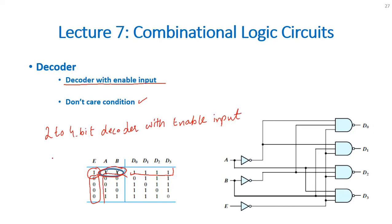Here we have 2 to 4 bit decoder with enable input. If the enable is 0 then it would totally depend on the value of the inputs.